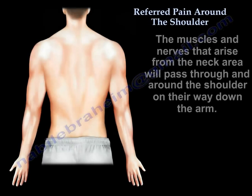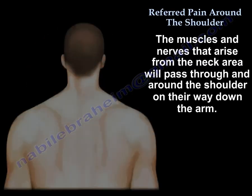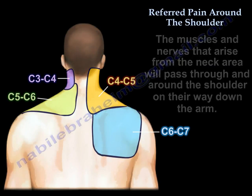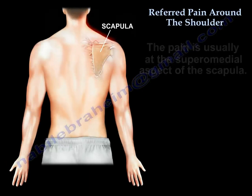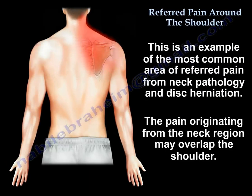The muscles and the nerves that arise from the neck area will pass through and around the shoulder on the way down the arm, and the pain may radiate down to the shoulder or the scapula. The pain is usually at the superior medial aspect of the scapula. This is an example of the most common area of referred pain from neck pathology and disc herniation.